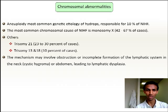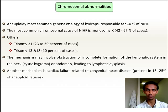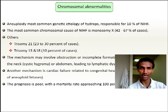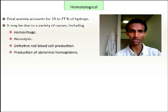Another mechanism is cardiac failure related to congenital heart disease, present in 25 to 50% of aneuploidies. The prognosis in the presence of a congenital anomaly or chromosomal abnormality is very poor — mortality may be as high as 100%.